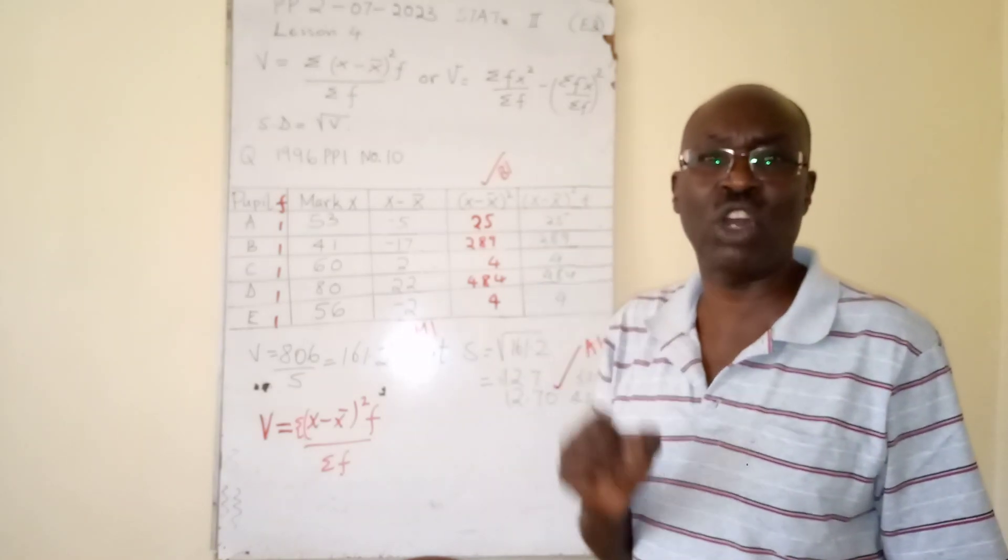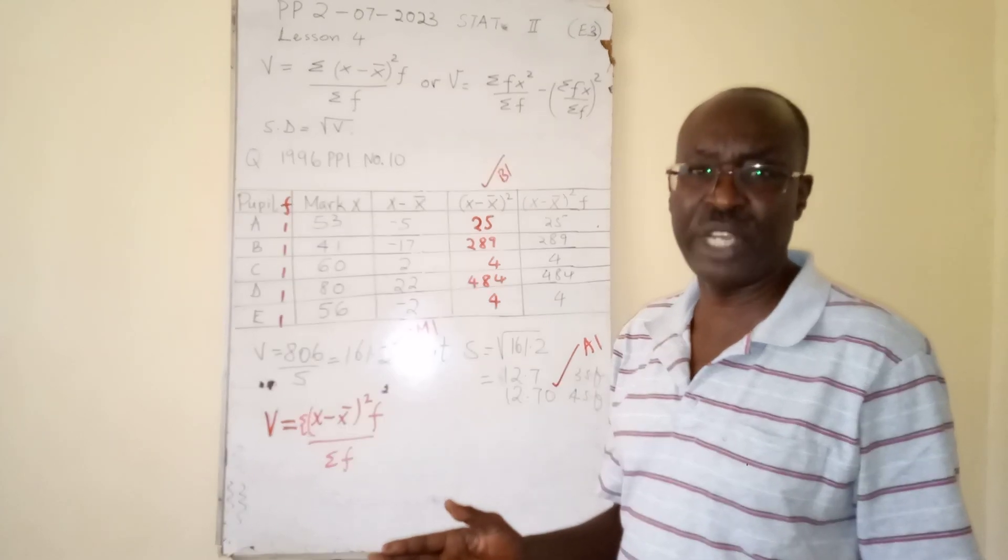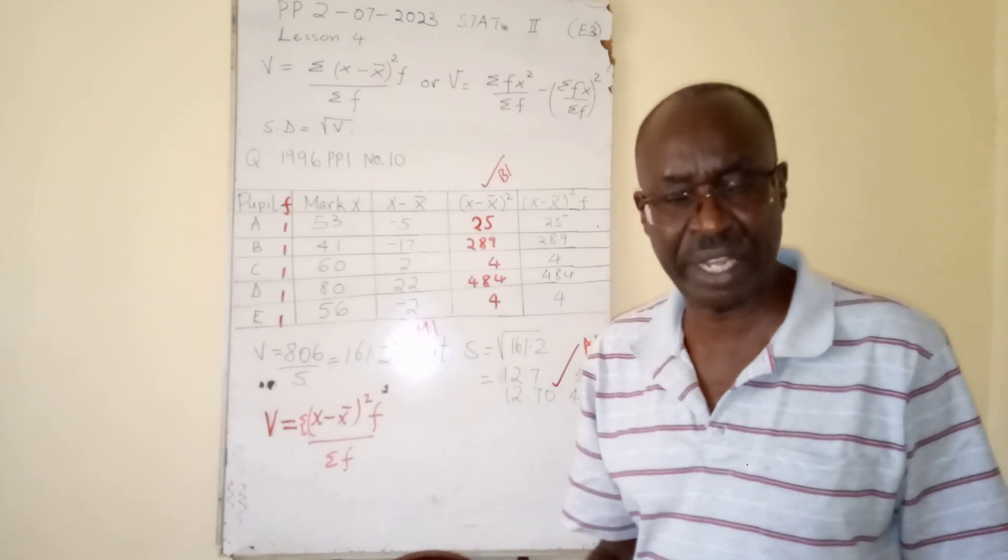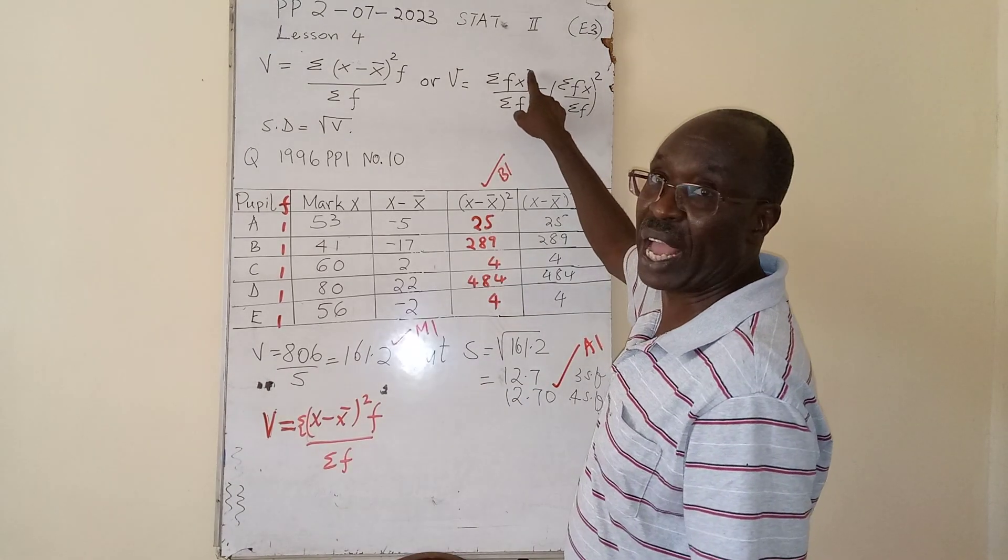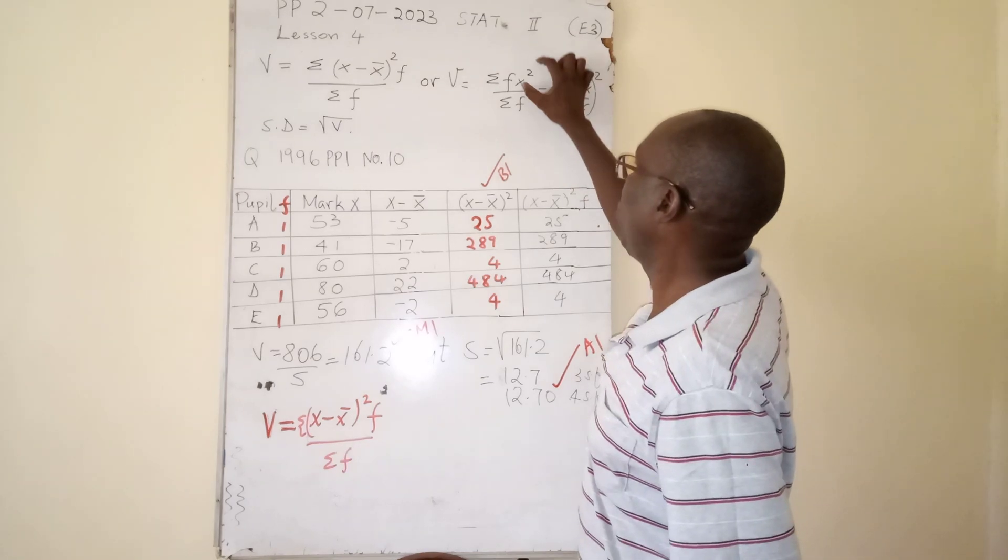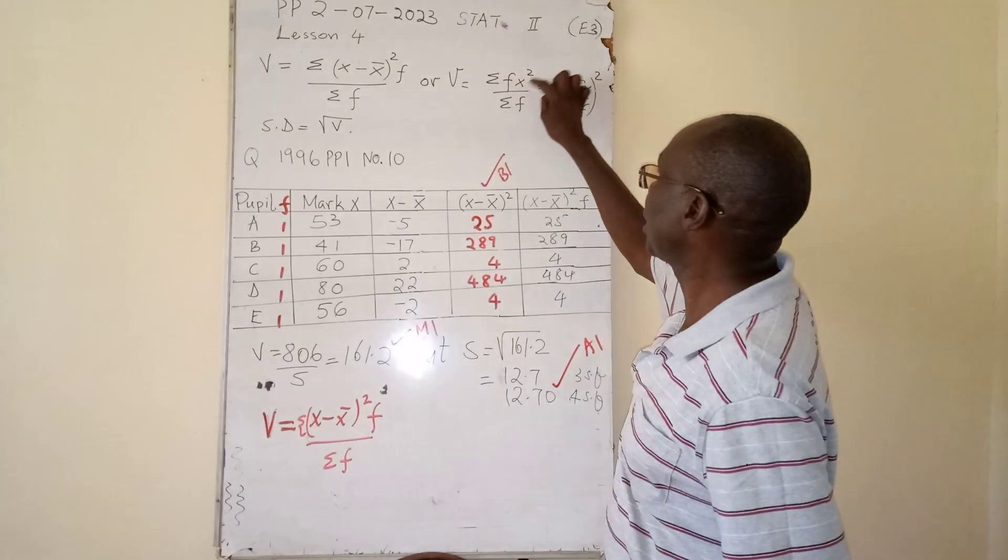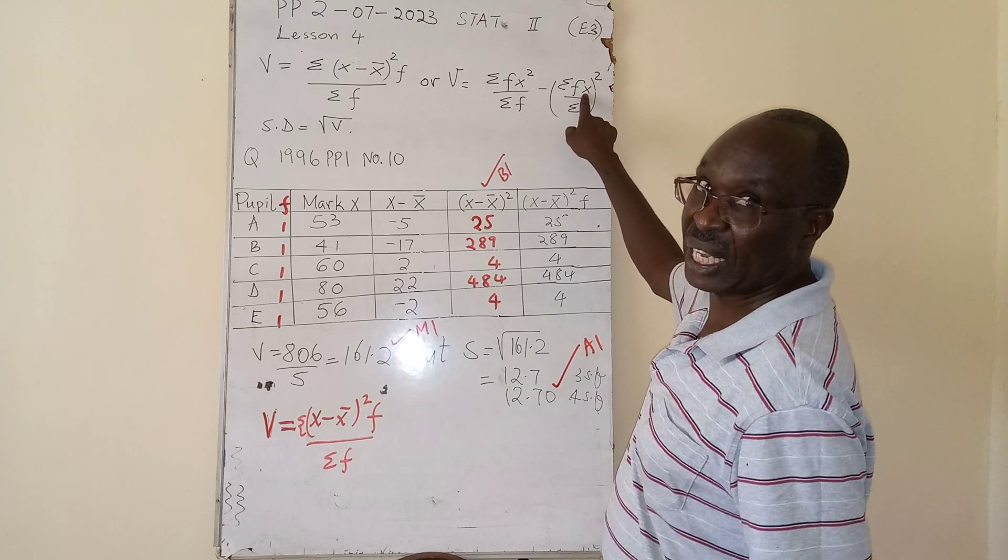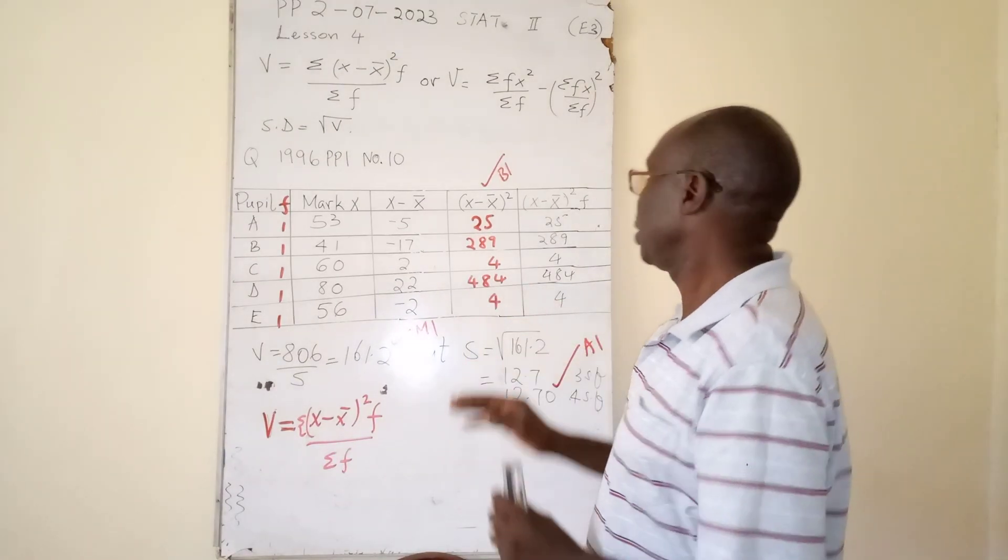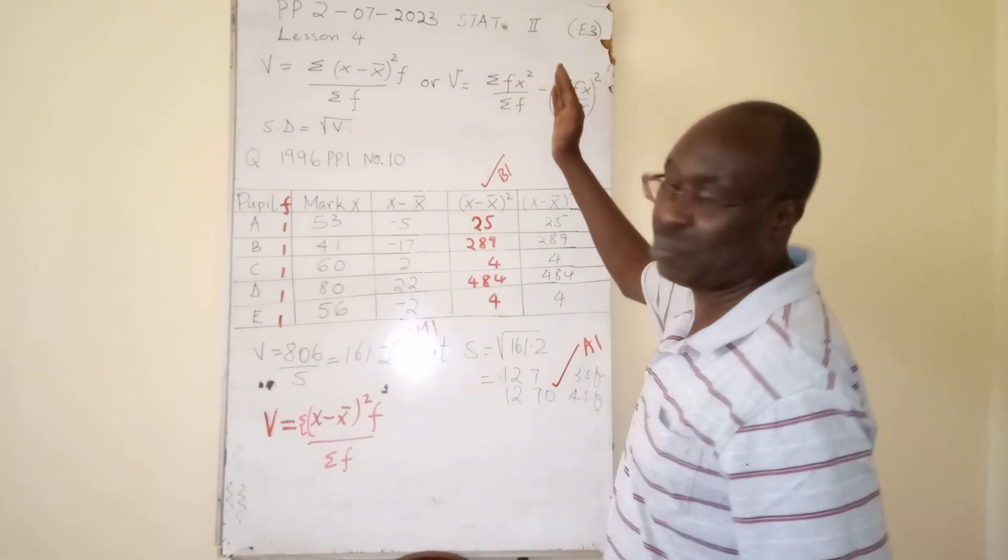You will have to create a column for D, deviations from assumed mean. D is equal to x minus assumed mean. Create a column of d squared. After getting them, multiply by individual frequencies. You will have done fd, then divide by f. When you divide, square. It is a matter of interpreting the columns vis-à-vis the formula.